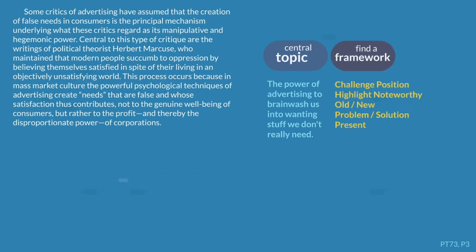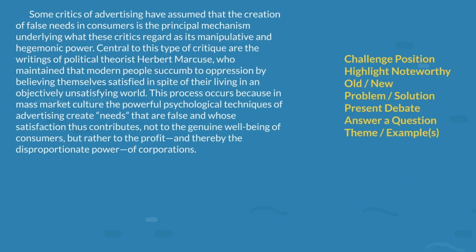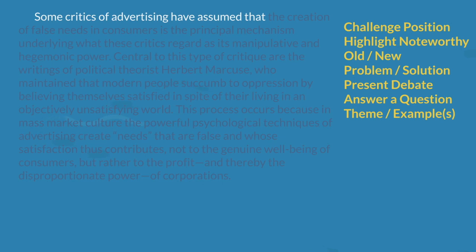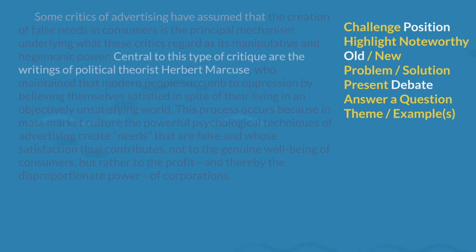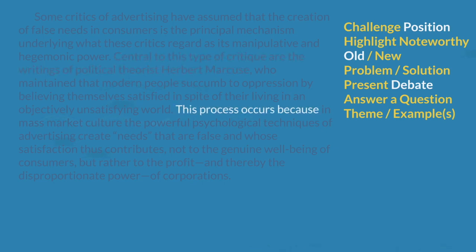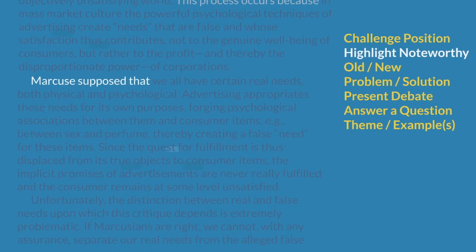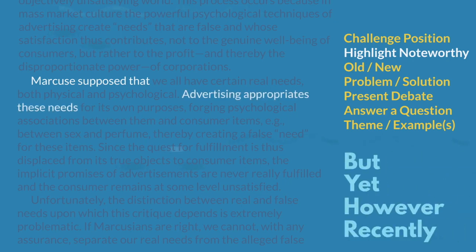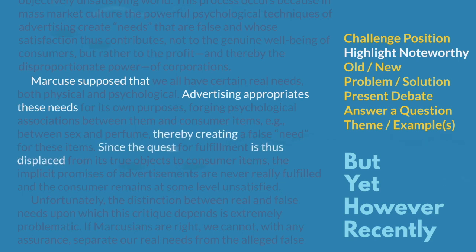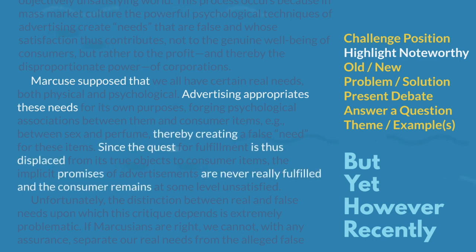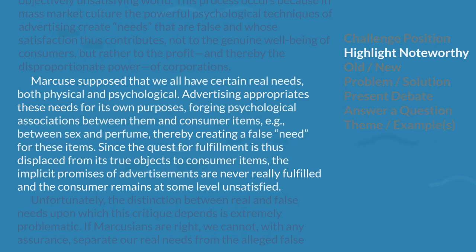As we continue through the paragraph, we're still in that position's mindset, so there isn't any pivot or author's voice in the first paragraph. I don't really know what my framework should be yet — maybe highlight noteworthy, we're just describing stuff so far. In the second paragraph, we're still in that first paragraph point of view. Everything in this paragraph is still explaining Marcuse's worldview, so at this stage I'd have to think it's a highlight noteworthy about Marcuse's worldview.